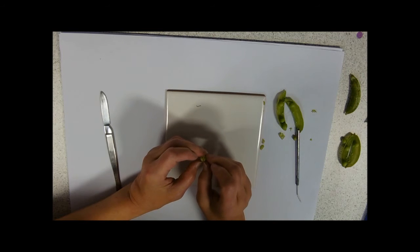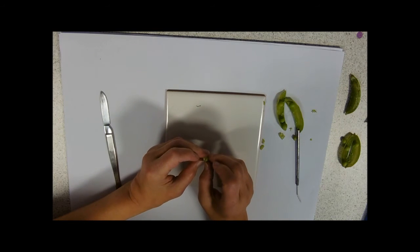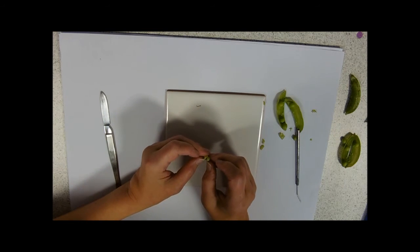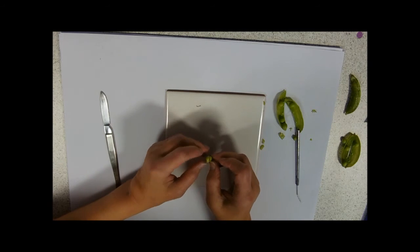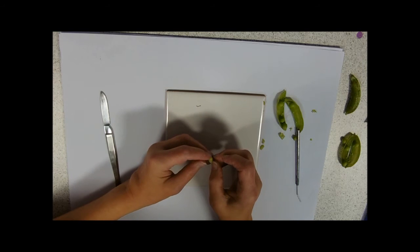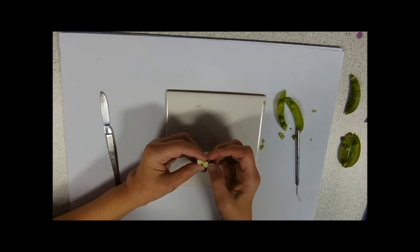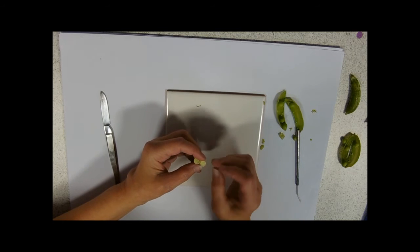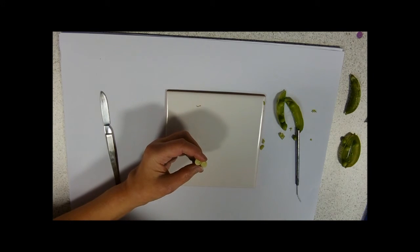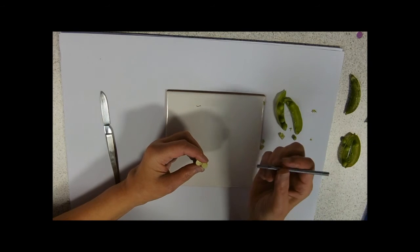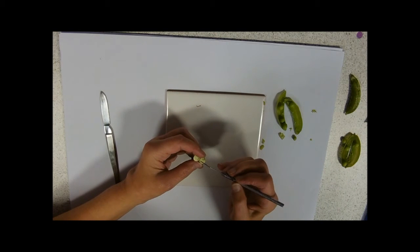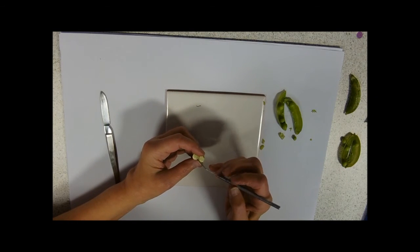I've now split it into its two cotyledons. The endosperm, the thing that was formed of that triploid nucleus, in the pea and bean family is absorbed into two cotyledons. These are storage leaves. They're not true leaves. They don't do photosynthesis when they emerge.